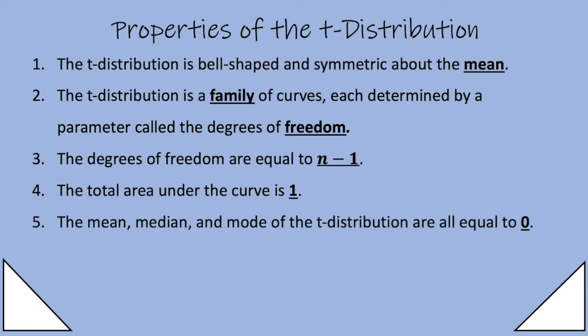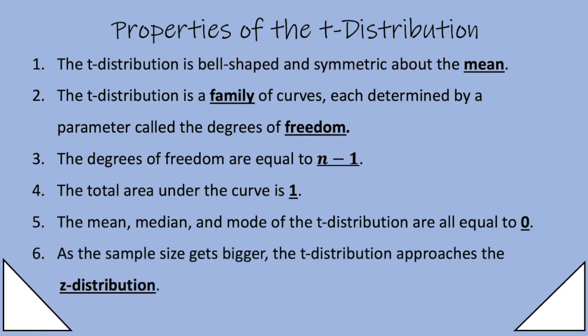The mean, median, and mode of the t distribution are all equal to zero. And as the sample size gets bigger, the t distribution approaches or gets more and more like the z distribution.